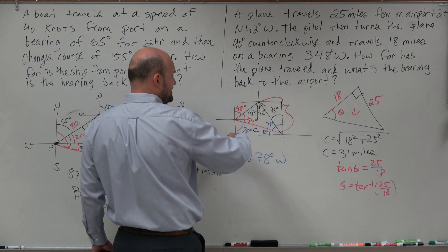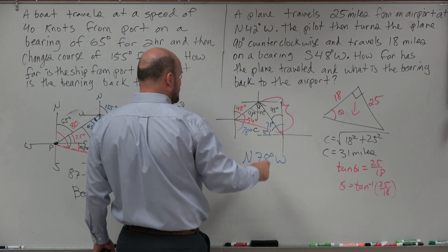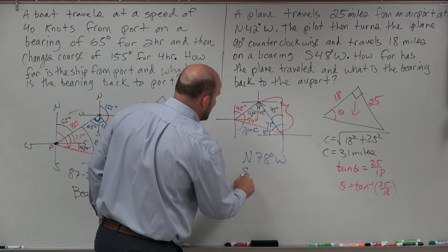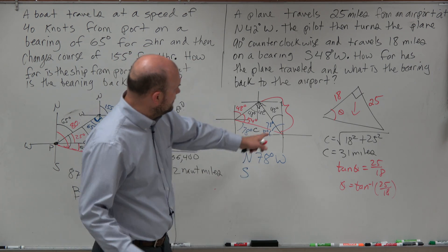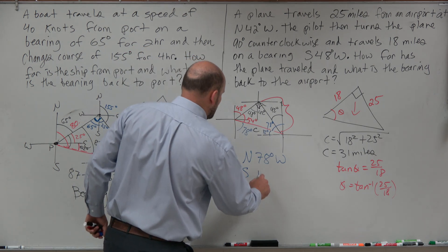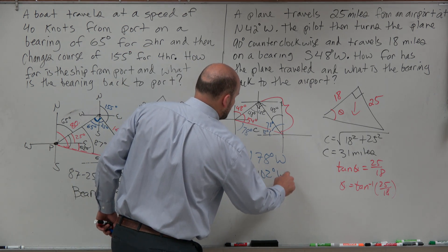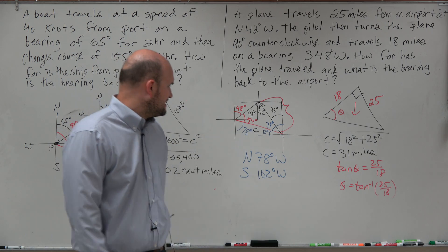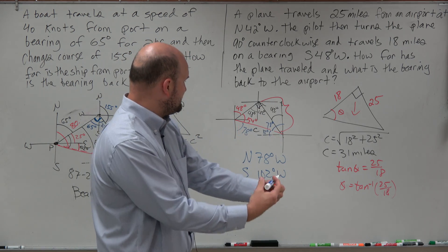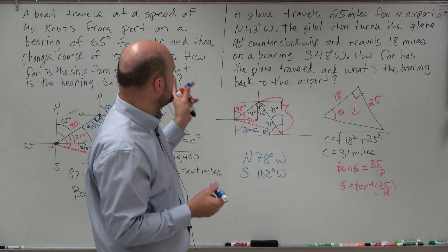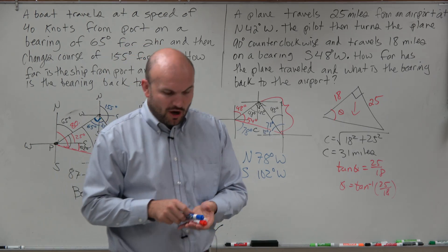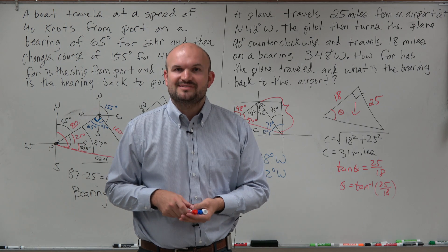So you could say north 78 degrees west. Or equivalently, south 102 degrees west — which gives the same result from the final position back to the original airport. That is how you solve word problems with bearings. Thanks.